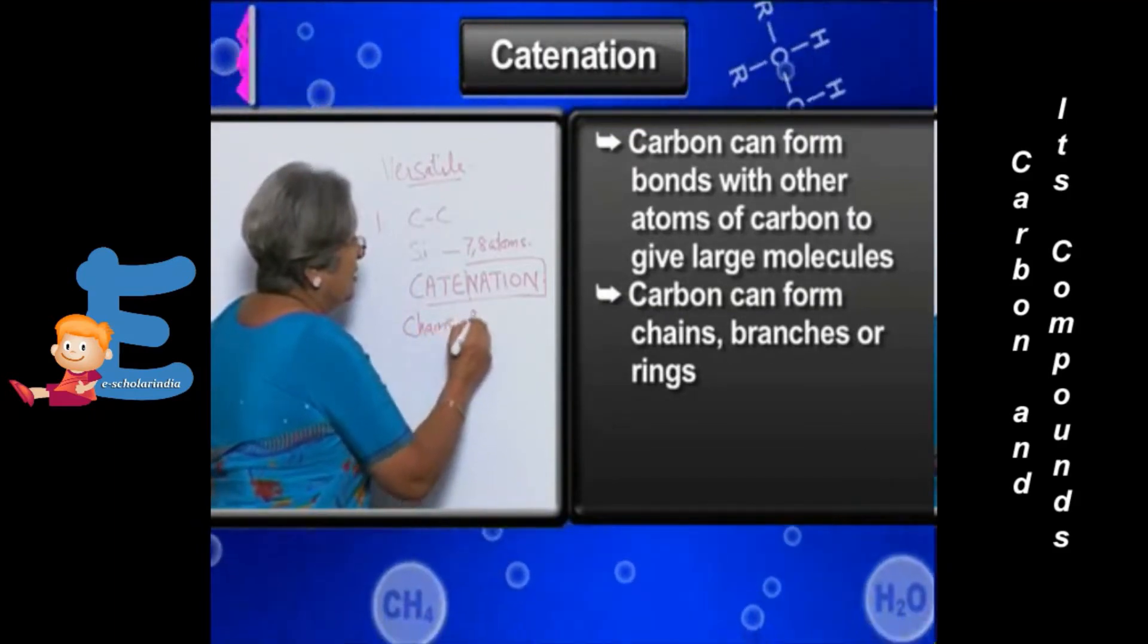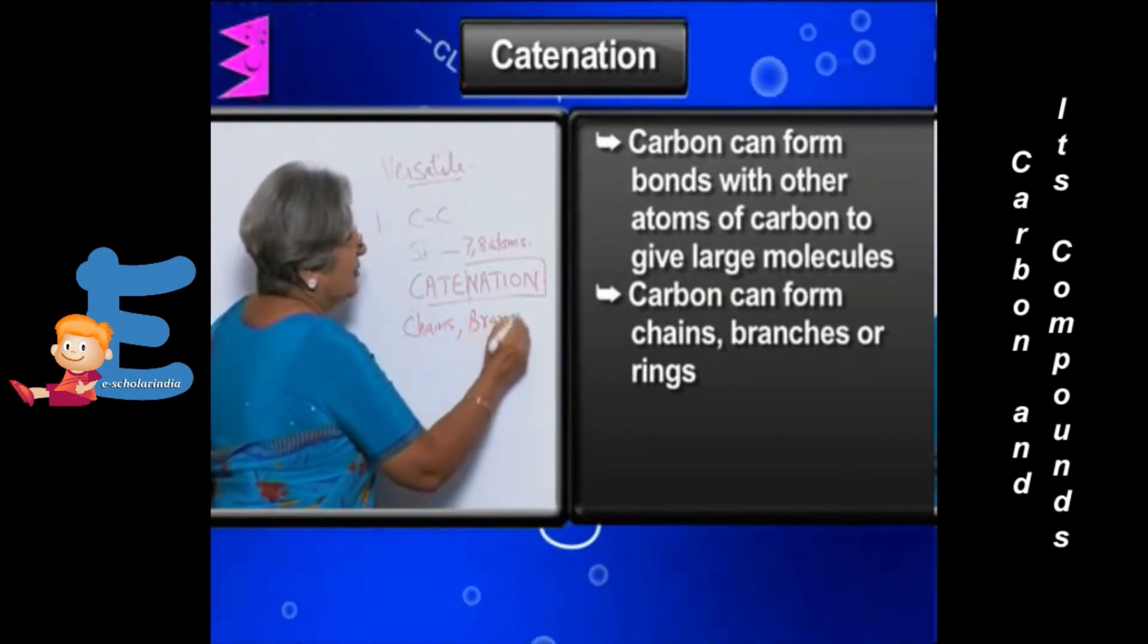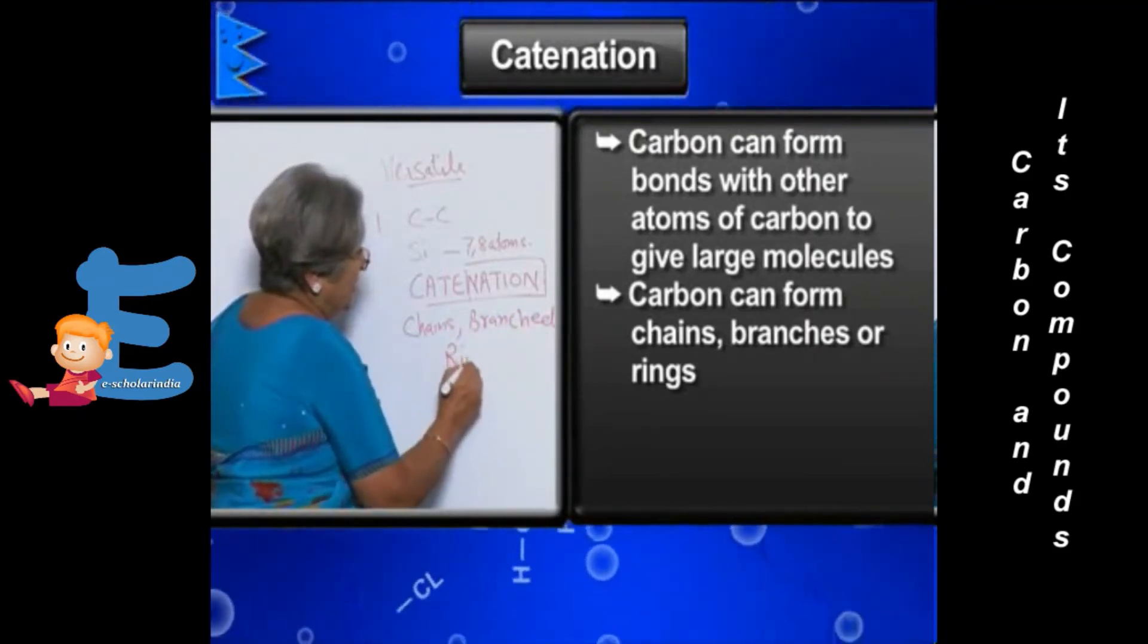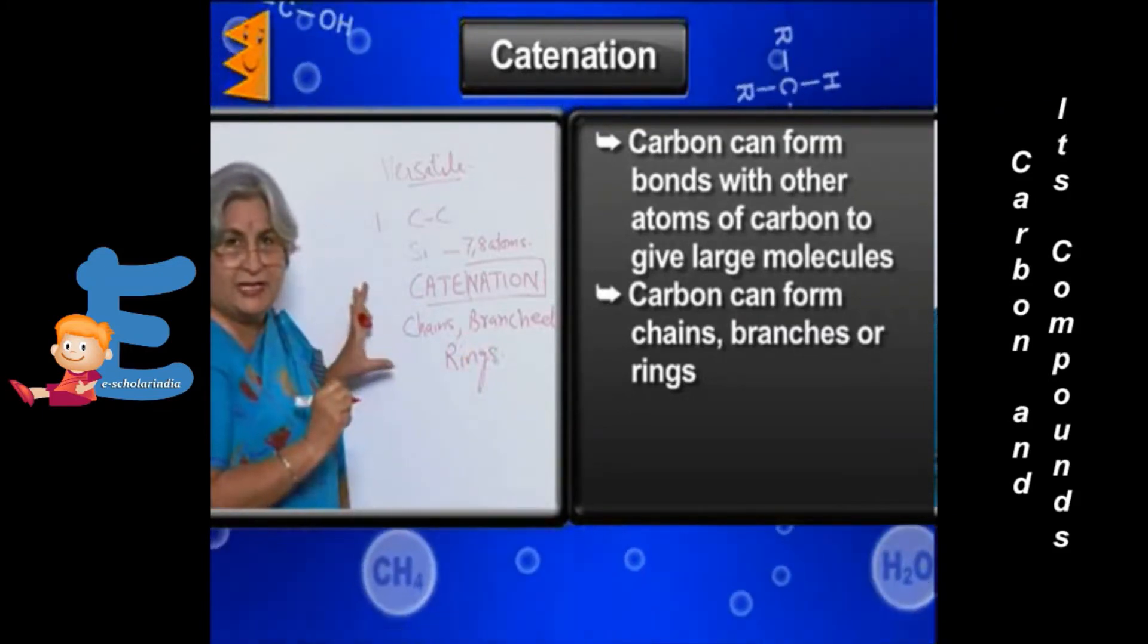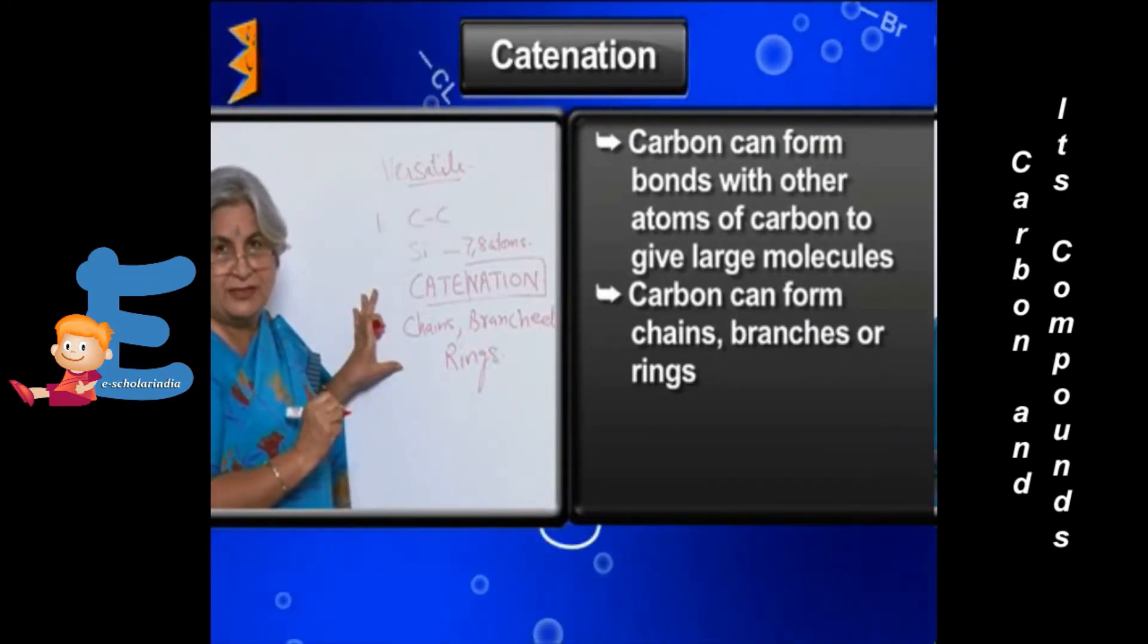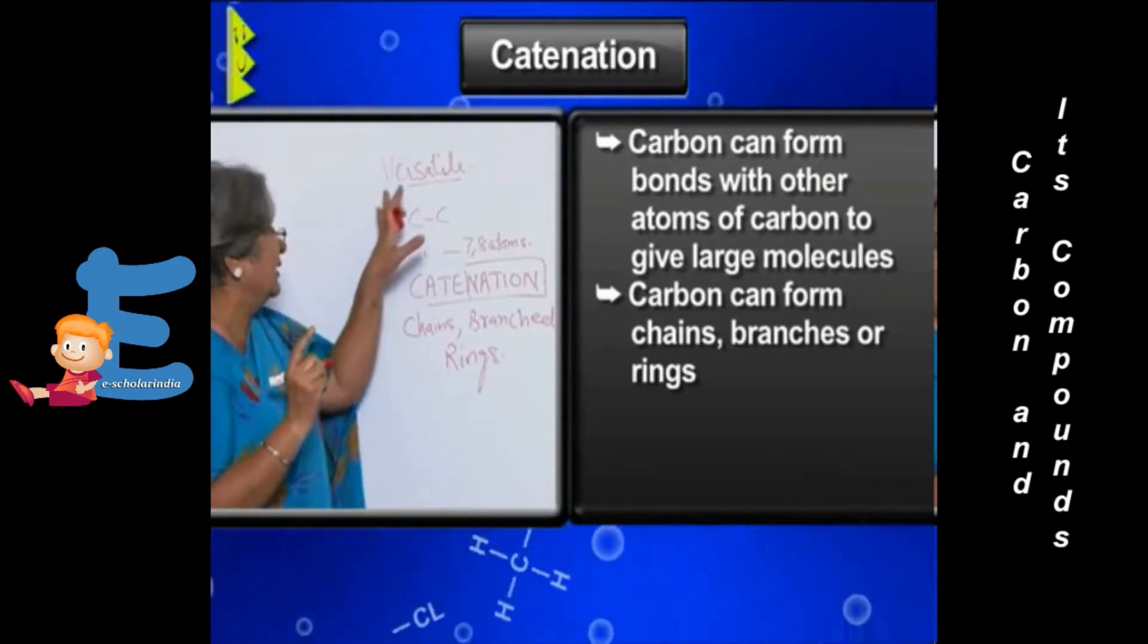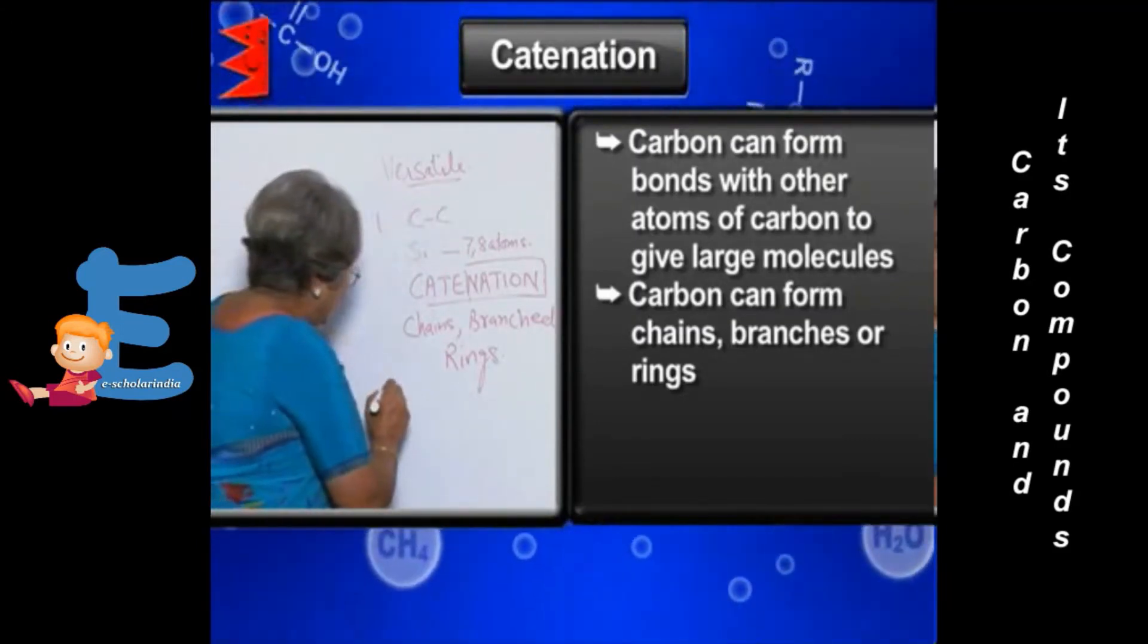We will get into the details of these forms. So this is one property of catenation that makes carbon versatile. Secondly,